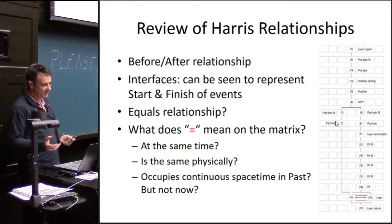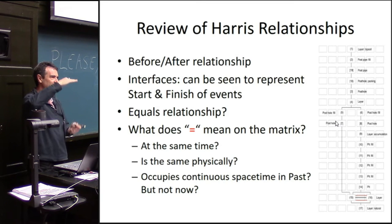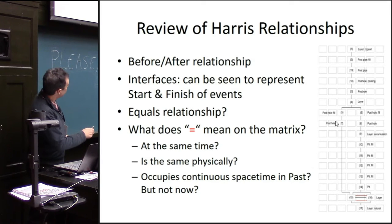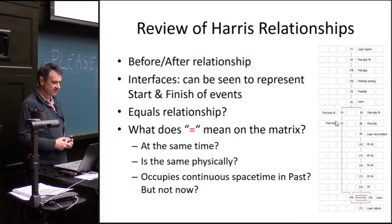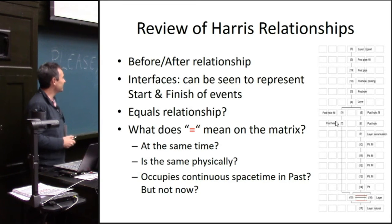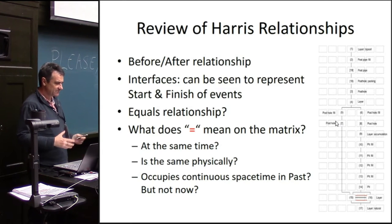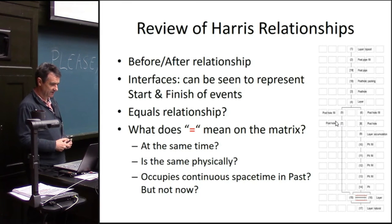This point is that the Harris Matrix only really deals with the before-and-after relationship — the stratigraphically before and after. Those boxes really only have that link; the lines between them are talking about before and after, or equals. But there's really only those things that archaeologists are recording in the field — and some archaeologists aren't even necessarily using this single-context recording approach. It does leave gaps in the records that we might be able to exploit with some of the technologies we've evolved, if we can get the data into the right structure.